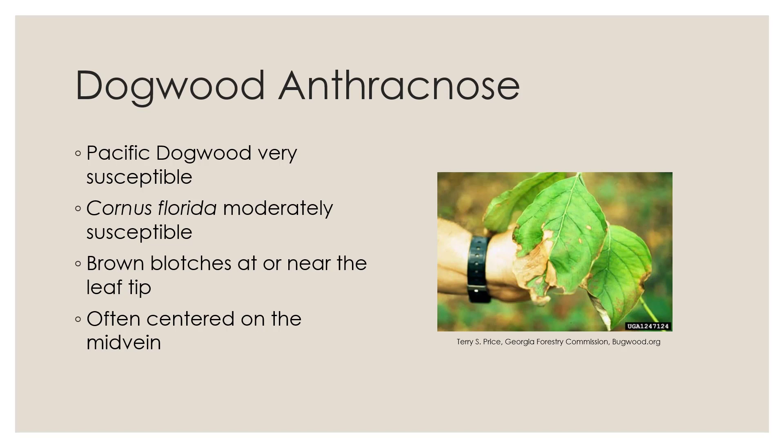Anthracnose is anthracnose — there are many organisms associated with the name. Pacific dogwood is very susceptible; Cornus florida is moderately susceptible and is a real problem on the east coast. You can see brown blotches at or near the leaf tip. Water from leaves above drips down, rolls along the main vein, and continues spreading to lower leaves.